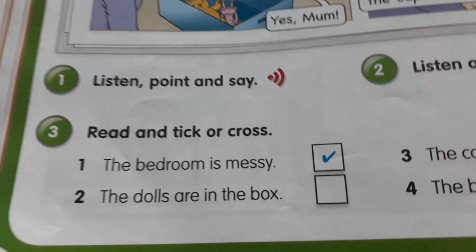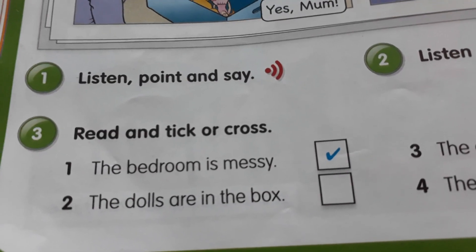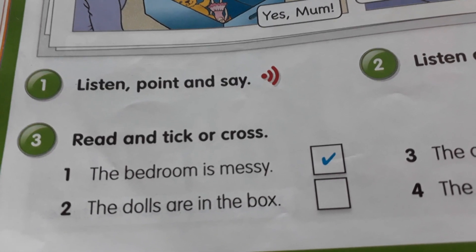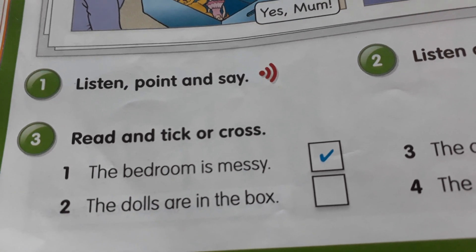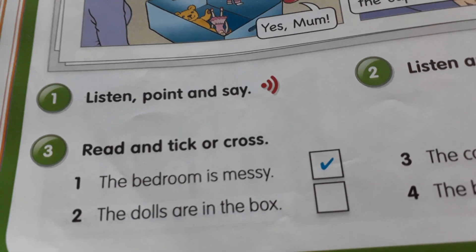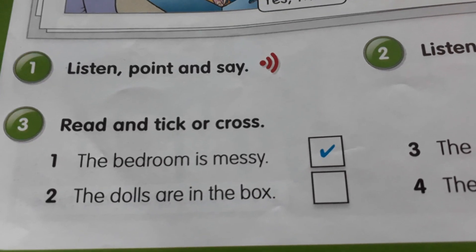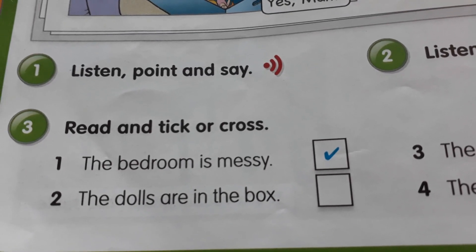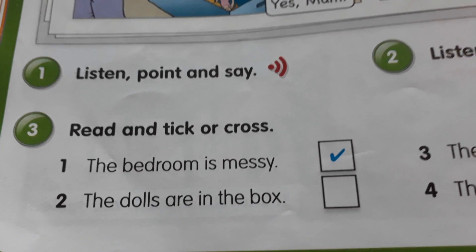Yes, I'm here. Pastaj do t'va zhdoni, tёr shtimi numёr tre. Read and tick or cross. Pra le dzo dhe vendos tick, nёse është pёr shenja pёr po, se cross x pёr ju. For shembol, the bedroom is messy. Yes, tick.